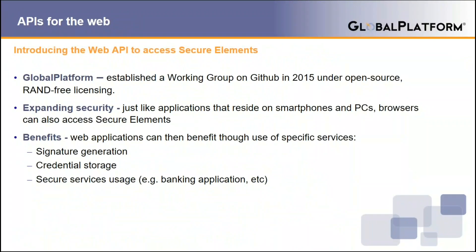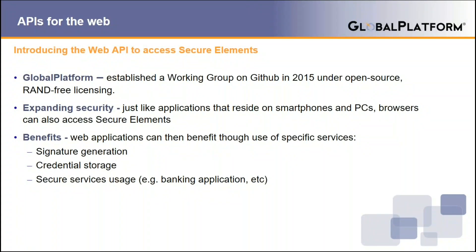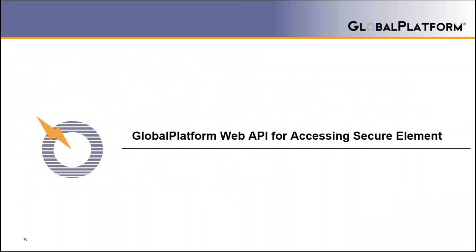Let's have a look at the context of the creation of this API. Before I pass to Olivier, I would like to make a very high level introduction. The objective of Global Platform was to have web applications benefit from similar access to secure elements as Android applications or trusted applications could. In order to address a broad community, Global Platform created a working group on GitHub with public access. The plan was to answer market expectations — generating a signature securely from a web app, storing credentials from the web app into a tamper-resistant token, or even accessing a banking application and paying from a web app. As you can see, with a web API, web apps can now benefit from the same security services as device apps.